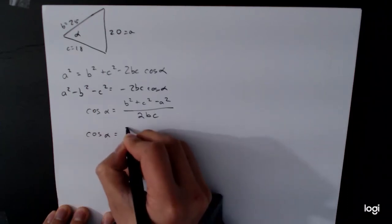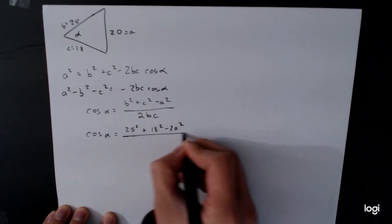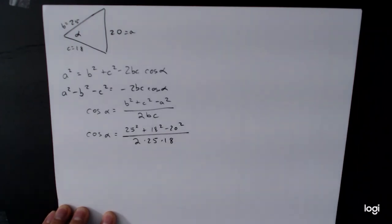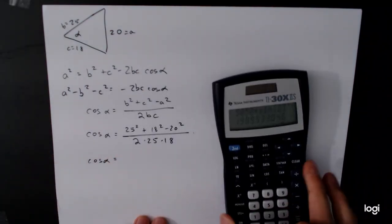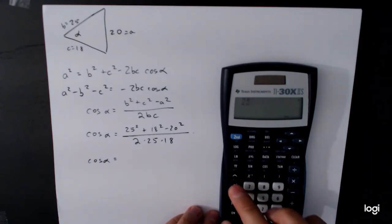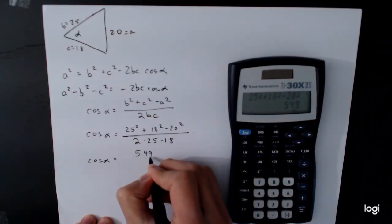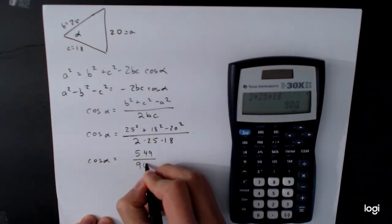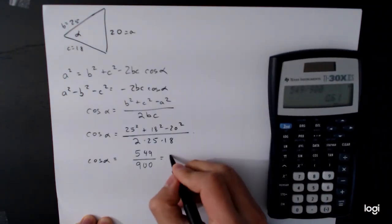Cosine of alpha is equal to 25 squared plus 18 squared minus 20 squared, all divided by 2 times 25 times 18. All right, so cosine of alpha is equal to, plug it in, and again, I'm going to do, I'm going to type the numbers in the numerator first. 25 squared plus 18 squared minus 20 squared, get 549. And then the denominator, 2 times 25 times 18, get 900. 549 divided by 900 is equal to 0.61.